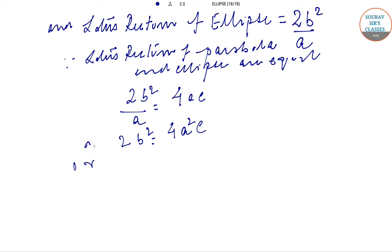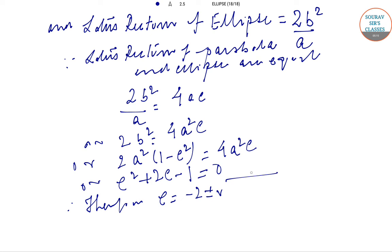Or 2a²(1 - e²) = 4a²e, which gives us e² + 2e - 1 = 0. Therefore, e = (-2 ± √(4 + 4))/2, which is -1 ± √2. Hence e = √2 - 1, taking the positive numerical value.